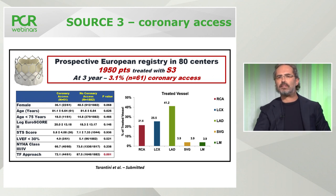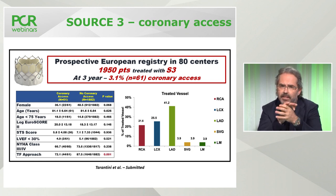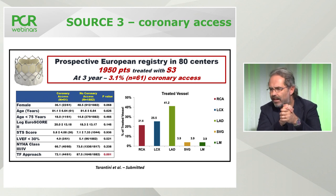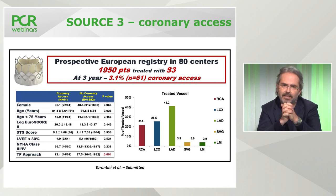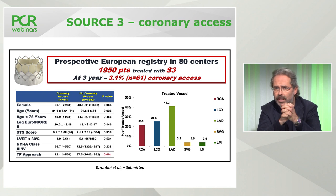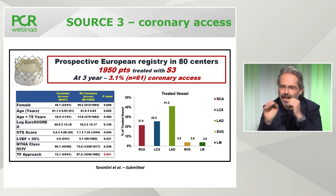This last slide shares data from a prospective European registry of about 2,000 patients treated with Sapien 3 with three-year follow-up. The need for coronary access because of a clinical indication was only 3%. The mean age was above 80 years and fewer than 20% of patients were below 75 years. The need for cannulation was spread across right coronary artery, circumflex, and LAD — no specific vessel predominated.